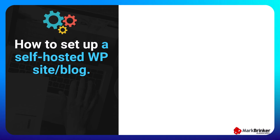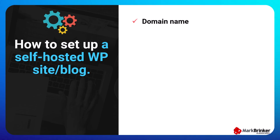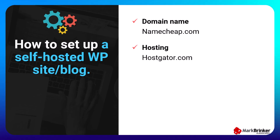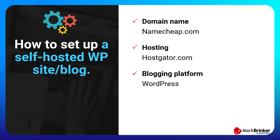The mechanics of setting up a self-hosted WordPress site and or blog are as follows. First, you'll need a domain name. My recommended domain registrar is Namecheap.com. Next, you're going to need a place to host your website or blog. I've been using HostGator since 2010 and they've been great. For your blogging platform, you'll need WordPress, obviously, which is free, open-source software.